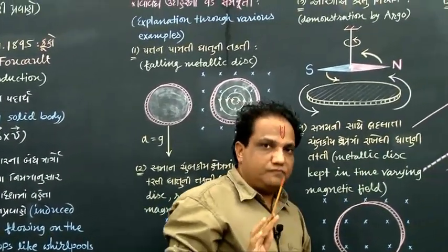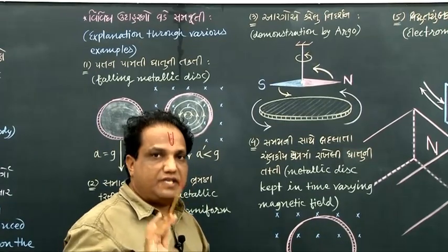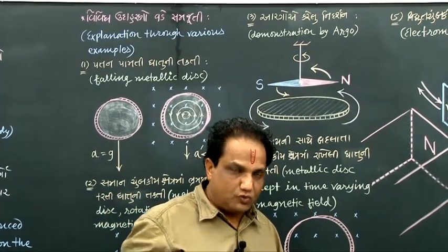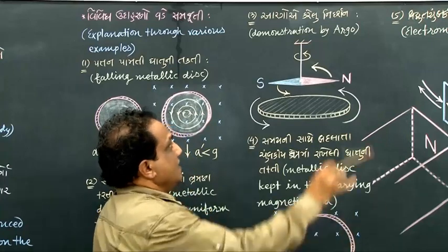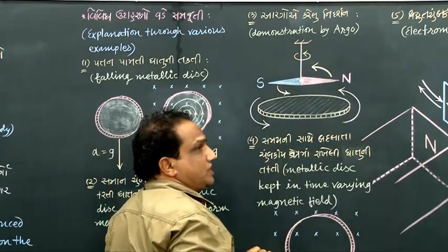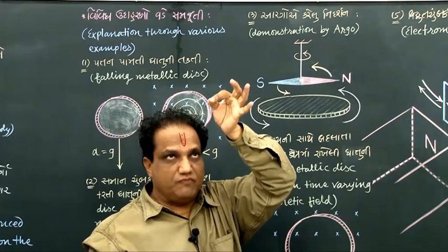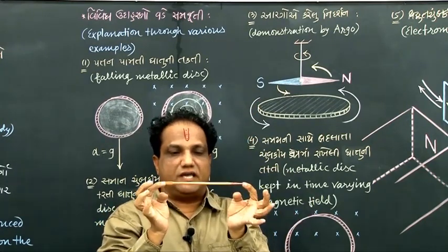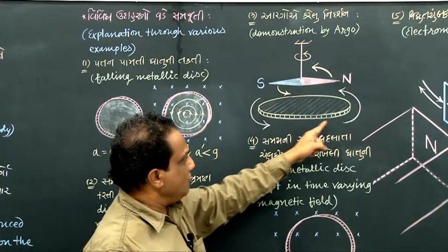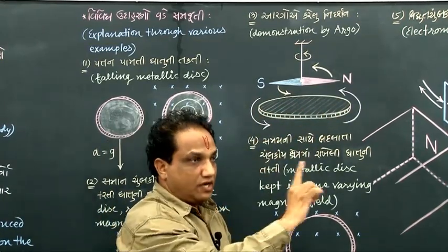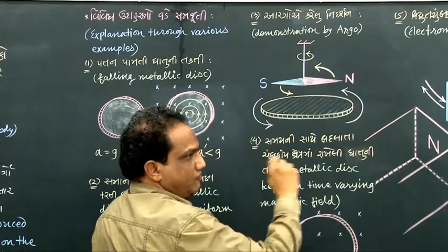There was a fellow named Mr. Argo who had practically demonstrated the existence of eddy currents. We have one magnetic needle which is suspended from a rigid support with the help of a thread or wire. Initially, that magnetic needle is lying horizontally and steadily. Below the magnetic needle, we have one solid metallic circular disc. Now, what we do is rotate this disc.